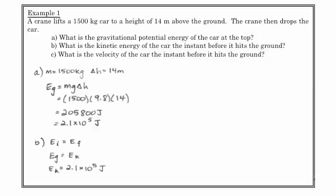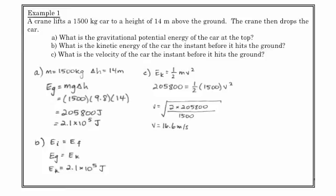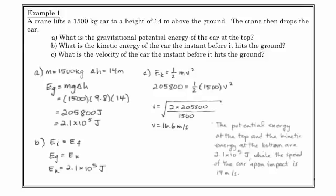In question C, it says what's the velocity of the car the instant before it hits the ground? Well, now that we know how much kinetic energy we have, we can solve for the velocity. We've got 205,800 joules, and that's equal to 0.5 mv squared. If we solve this, we find that the final speed of the car, the instant before it hits the ground, is 16.6 meters per second. So the potential energy at the top and the kinetic energy at the bottom are the same.